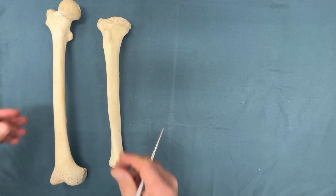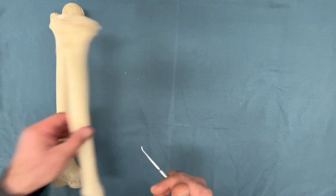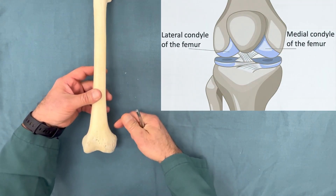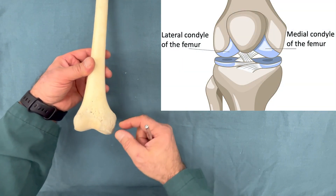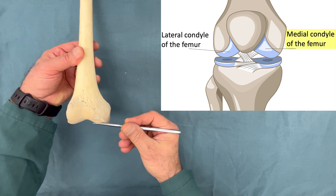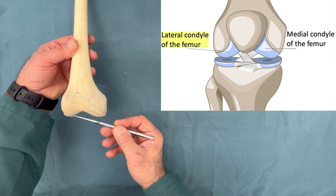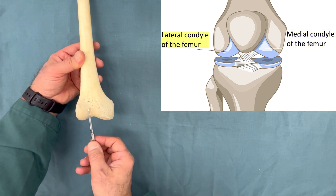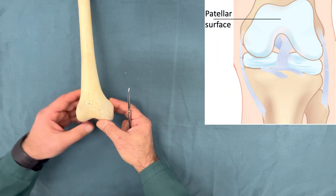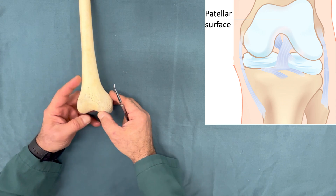On this side you can see the femur and this is the tibia. On the femoral side we have the medial and lateral condyles — this is the medial condyle of the femur, this is the lateral condyle of the femur. Between these two on the anterior side we have the patellar surface, which articulates with the patella.